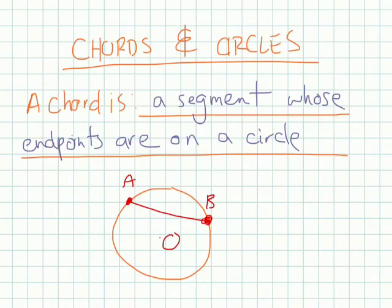Let me use a different color for that. A chord is a line segment, and where its endpoints are on a circle. So that's it, here's a chord. Any line segment that you see inside a circle where its endpoints end on the circle is a chord. Let's move on.